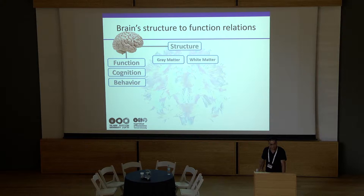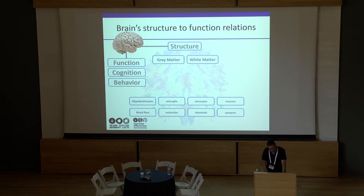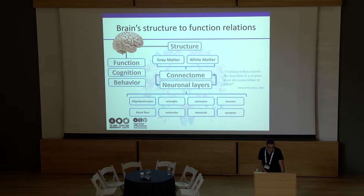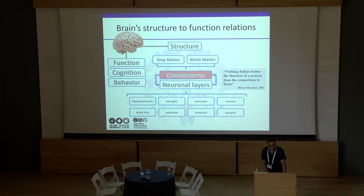We can look at the macro scale of gray matter and white matter, or at the molecular or cellular level. However, there are two mesoscales in terms of brain structure: one is the connectome, and the other is the cortical layers. The layers of the cortex form the connectome as they develop, and vice versa. As Marcel Meshulam said, nothing defines better the function of a neuron than the connections it forms.